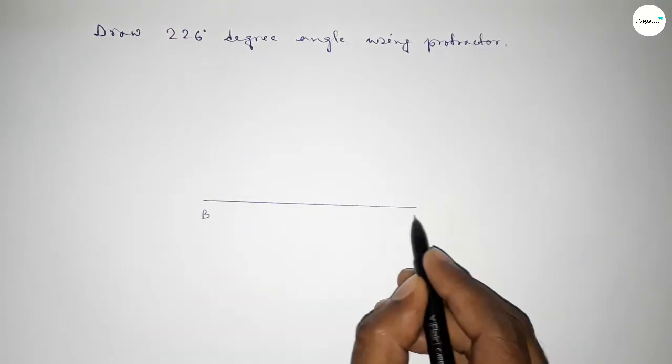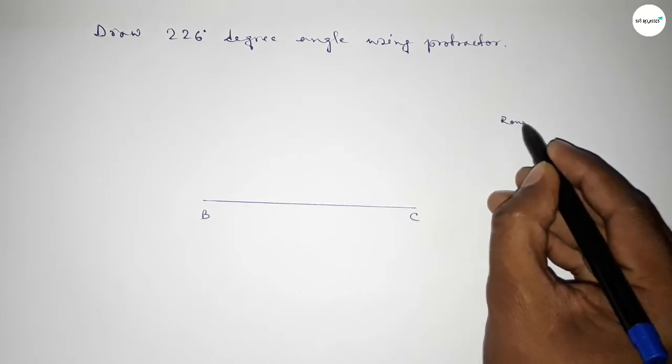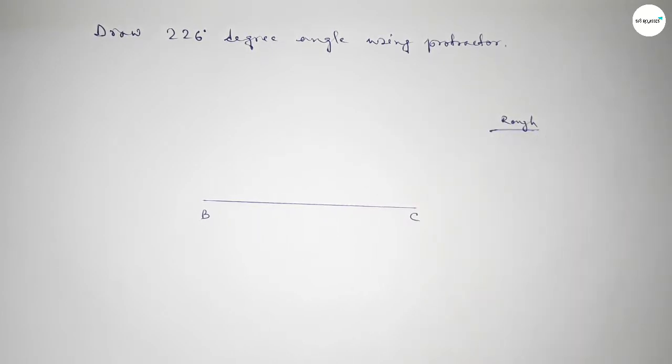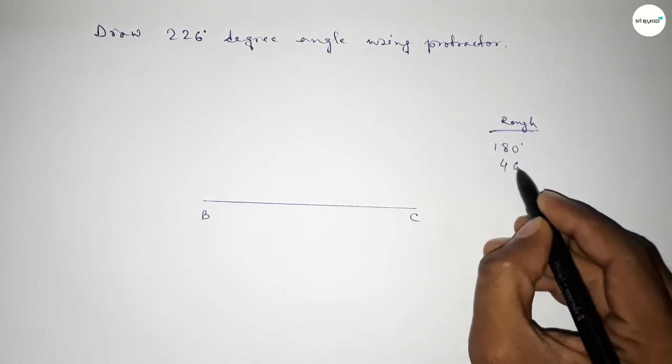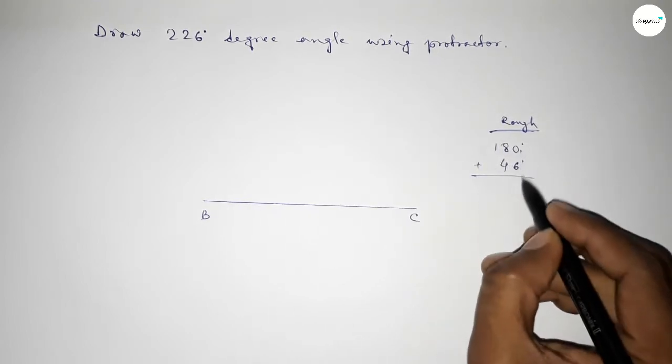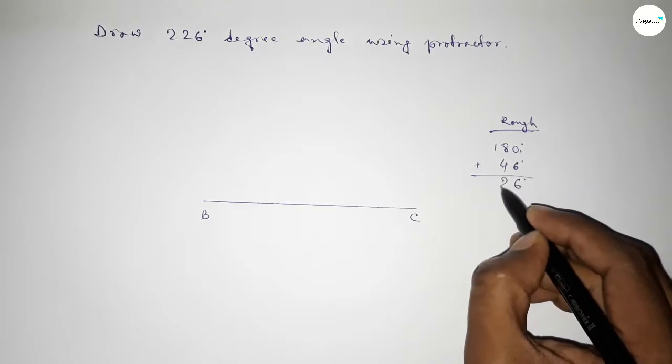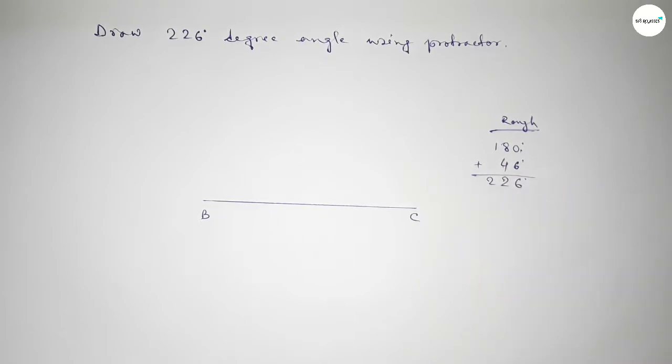Taking here point B and here point C. Now roughly discussing some calculation here. So if we add 46 degree angle with 180 degree, then we can get 226 degree. This is 6, 12, 2.